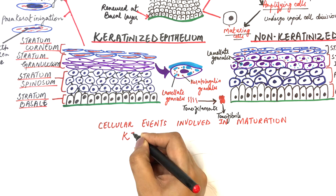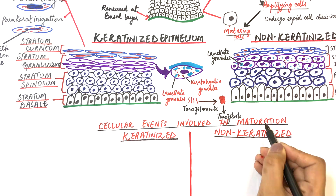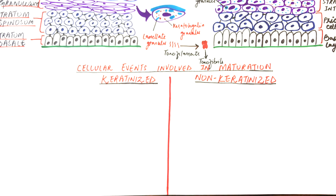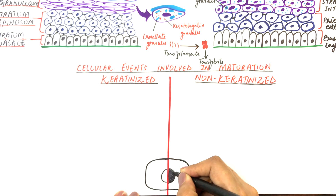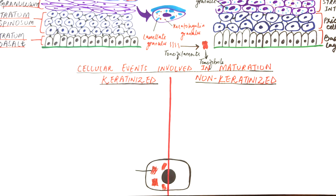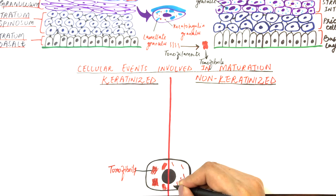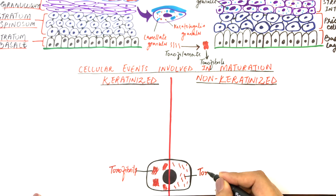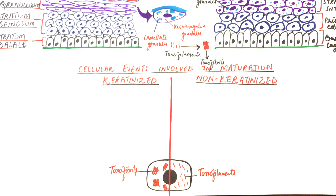As the underlying cells divide and go through the maturation process, they develop intracellular organelles which synthesize structural proteins in the form of tonofilaments. The key difference in both types of epithelium is the abundance and arrangement of the tonofilaments. In keratinized epithelium, tonofilaments aggregate to form bundles of tonofibrils. However, in non-keratinized epithelium, tonofilaments do not form aggregates and they remain as tonofilaments. The cells increase in size as they move from the basal to the prickle cell layer.